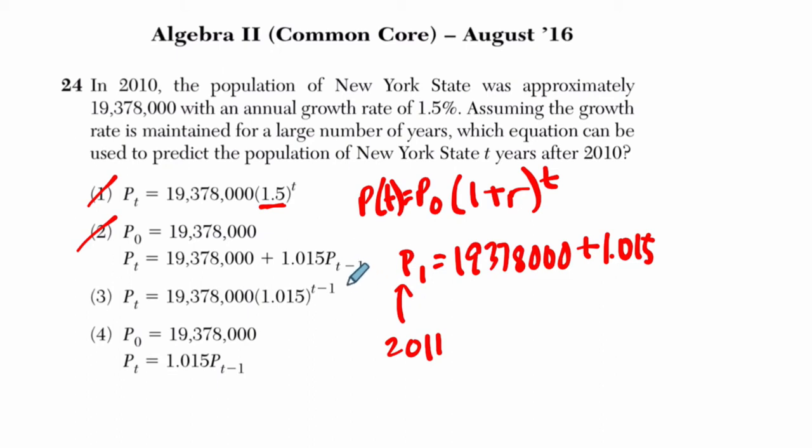I get 19,378,000 plus what? 1.015 times P of T minus 1, which is what? Well, T is 1 here, so 1 minus 1 is 0. So this is really just P of 0, which is 19,378,000. So you can see that we have our starting population plus our starting population and 1.5% of that.